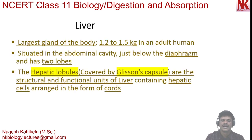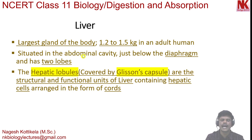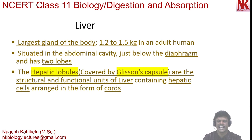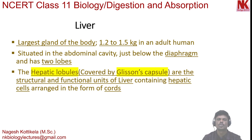Liver is the largest gland of the body. It weighs about 1.2 to 1.5 kg in an adult human. It is situated in the abdominal cavity just below the diaphragm. The diaphragm is a flat internal skeletal muscle that separates the thoracic cavity from the abdominal cavity.